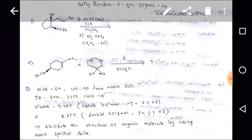Third question: we are given a compound with molecular weight 69, UV with no lambda maximum above 200 nm, and IR values at 2941 cm⁻¹, 2273 cm⁻¹, and 1410 cm⁻¹. ¹H NMR data: 7.28 ppm septet, 4.2 mm integration, coupling constant J = 6.7 Hz; and 8.67 ppm doublet, 2.5–8 mm integration, coupling constant J = 6.7 Hz. Elucidate the structure of the organic molecule using this spectral data.